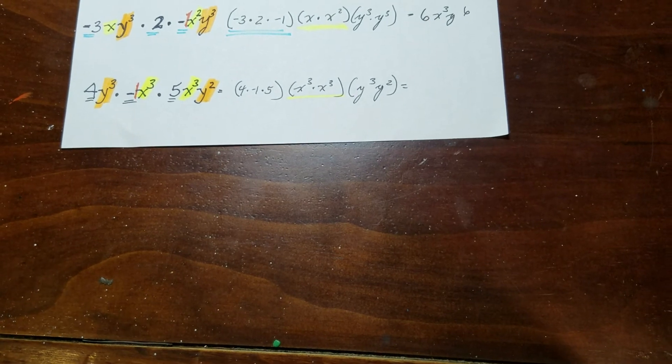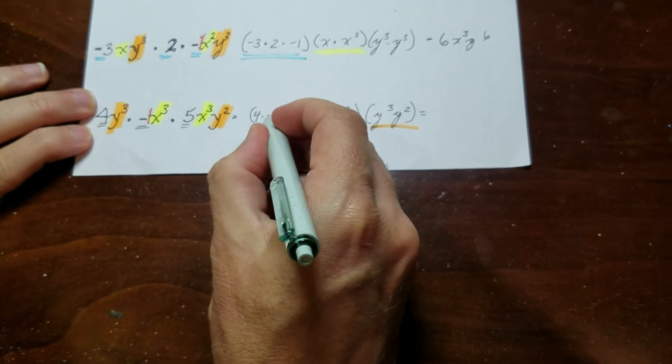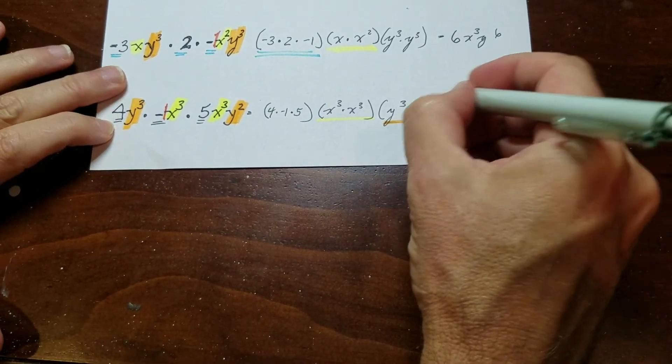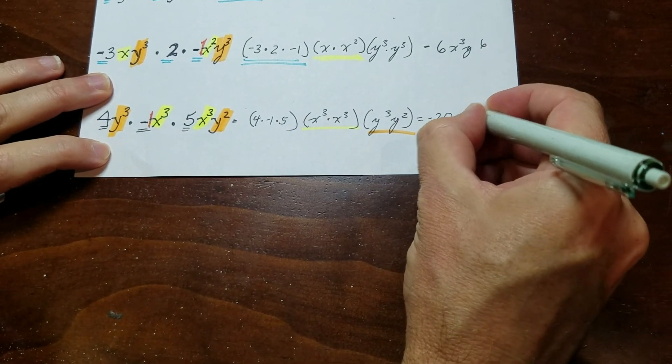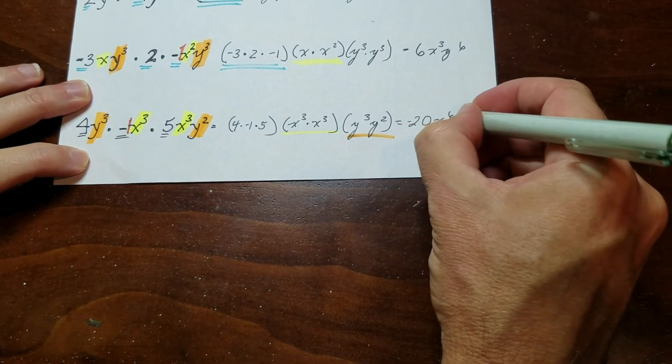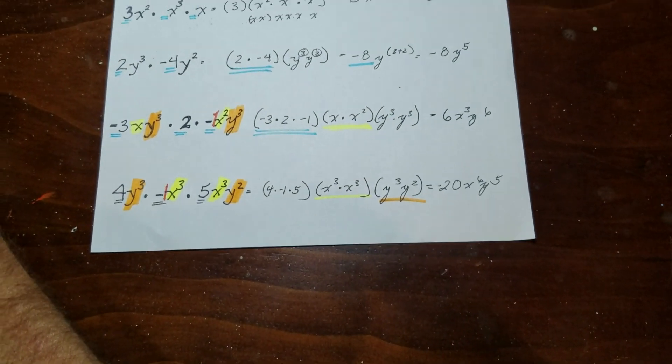And then I just got to put it back together again. So I've got 4 times negative 1 is negative 4. Negative 4 times 5 is negative 20. There's six x's here. And there's five y's. And that is how you multiply exponents with the same base.